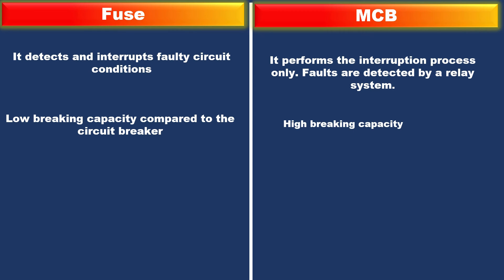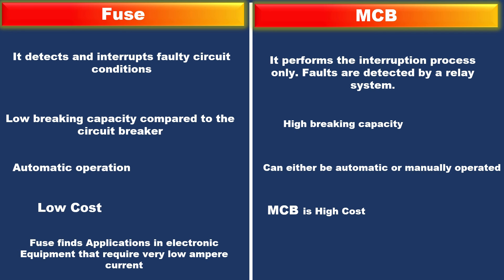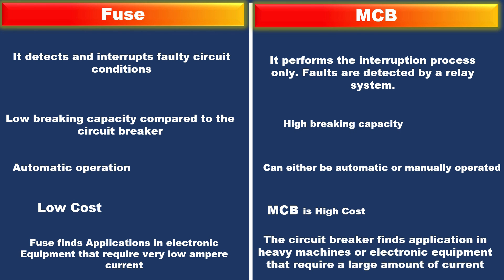An MCB has a high breaking capacity. A fuse operates automatically, while an MCB can either be automatic or manually operated. In terms of cost, a fuse is low cost while an MCB is high cost. For applications, a fuse is used in electronic equipment requiring very low current, while a circuit breaker is used in heavy machinery or electronic equipment that requires a large amount of current.